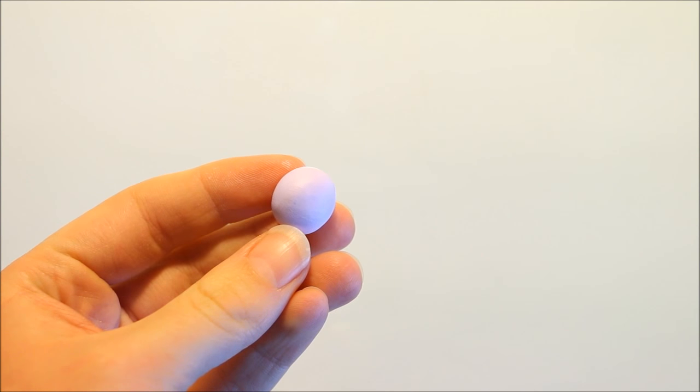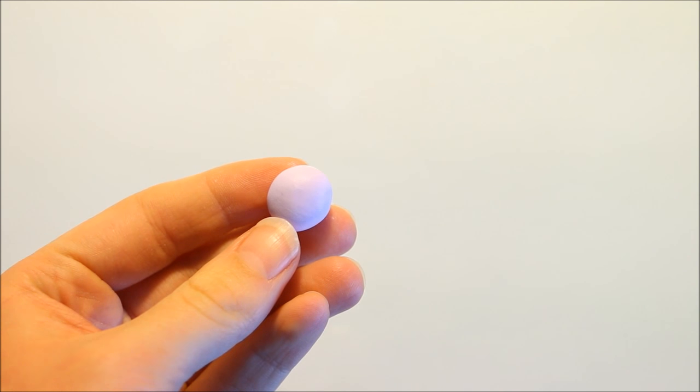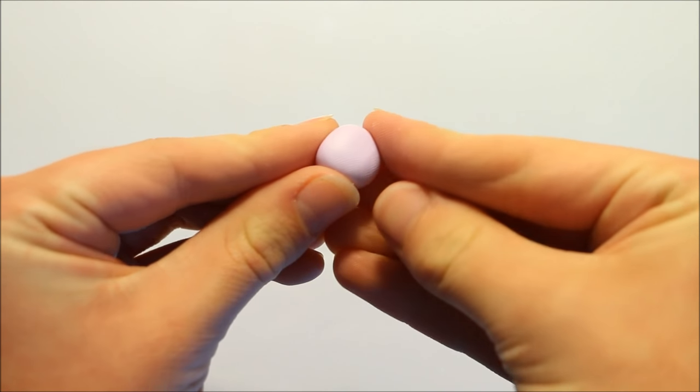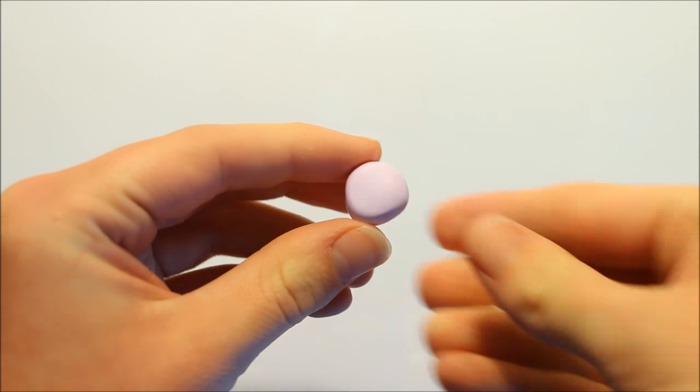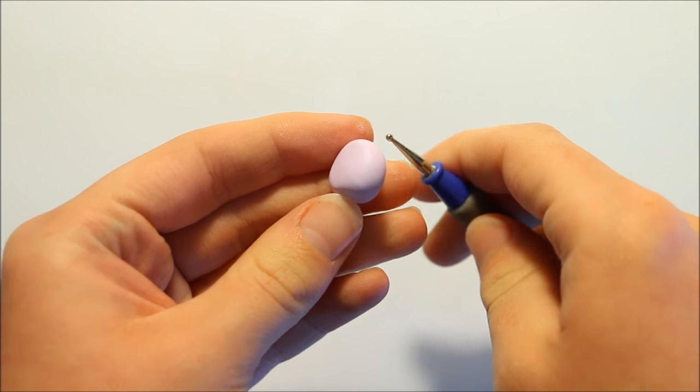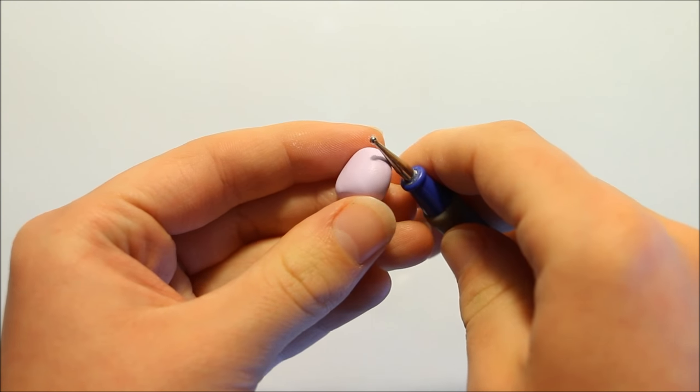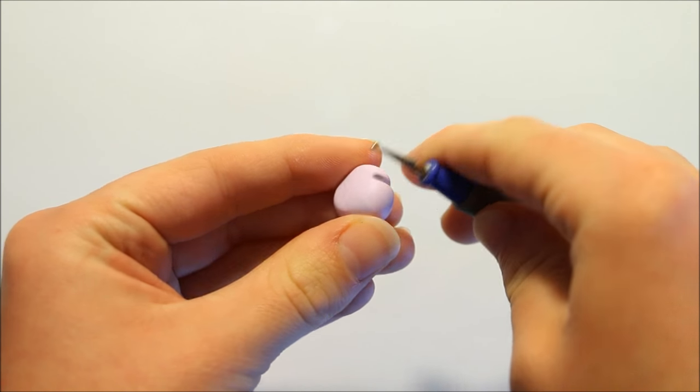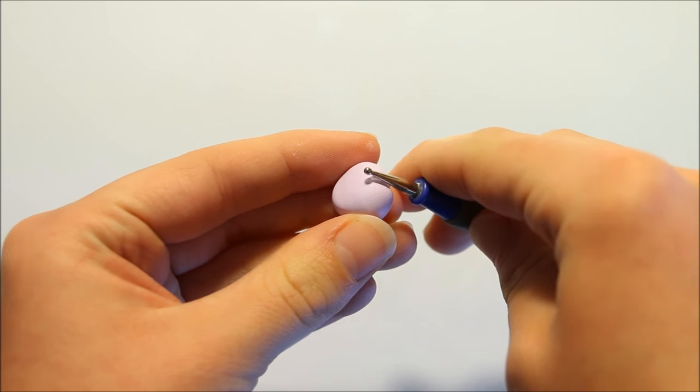So starting off making the base of the locks and key, I'm using some random scrap clay I had because once we cover it with glitter you're not going to see it anyway. I'm beginning with the lock, so I took some of the scrap clay and I'm going to pinch the point with my fingers and then use the side of one of my dotting tools to help make the little crevice on the top.